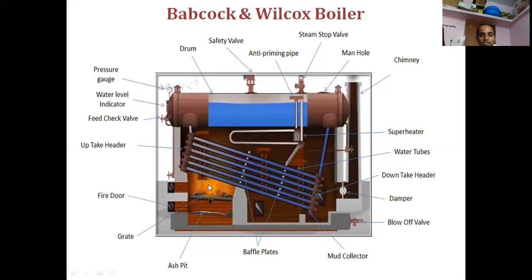The hot gases developed need to give away their heat completely to the inclined water tubes. To achieve this, two baffle plates are provided. The hot gases pass through the first set of tubes, then through the superheater tube, are diverted, pass through the water tubes again, are diverted once more, and after giving their heat, pass via the damper toward the chimney. Without the baffle plates, the hot gases would move directly to the chimney. The baffle plates ensure maximum heat transfer to the water in the tubes as well as to the steam in the superheater.